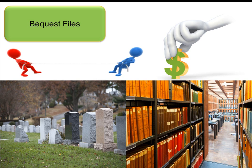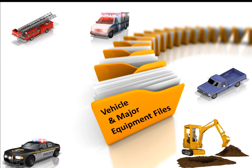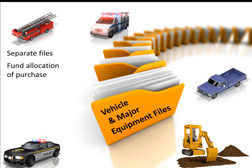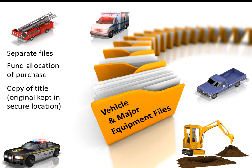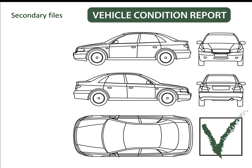You should have a file on all vehicles and major equipment — each item should have its own file. Note the allocation by fund of the purchase price. When this equipment is sold years later, you have to divide the sale proceeds by the same percentage by fund as the original purchase. Put a copy of the title in the file; the original title should be kept in a more secure location such as a safety deposit box or a fireproof safe. If the vehicle requires gratis plates, you can keep the registration documentation in this file. Secondary files, which may be kept by department heads instead of the fiscal officers, should include vehicle inspection forms, maintenance records, and copies of invoices for outsourced work.